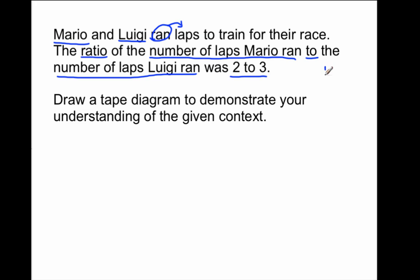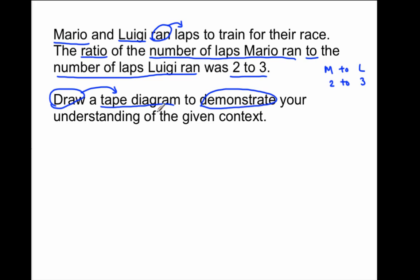Off to the side, just so I can get that down, I'm going to write Mario to Luigi is two to three — that's two units to three units. The next direction says to draw a tape diagram to demonstrate your understanding of the given context. Given context is very important; you can't just make something up. You have to use the information that you've received from this situation. Another word for context is situation.